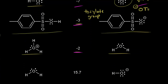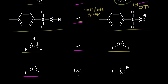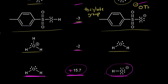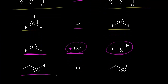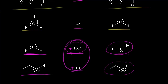Now let's look at water. Water's pKa value is positive 15.7, so it's not a very strong acid. The conjugate base to water is the hydroxide anion, OH minus, and this is a bad leaving group. Similarly, ethanol has a pKa value of positive 16, so the ethoxide anion is not a good leaving group. These positive pKa values indicate the conjugate bases are not very stable, which means they are bad leaving groups.